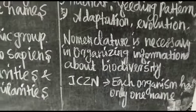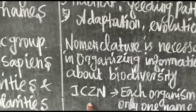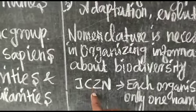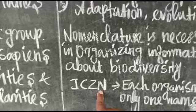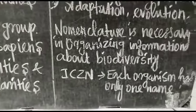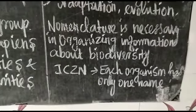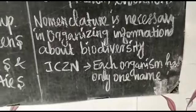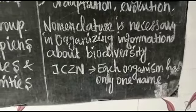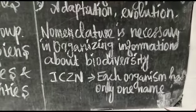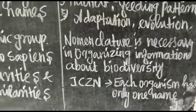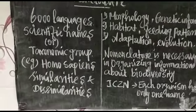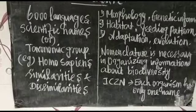The International Code for Zoological Nomenclature ensures that each organism has only one scientific name. Each organism's name consists of a genus name and a species name.